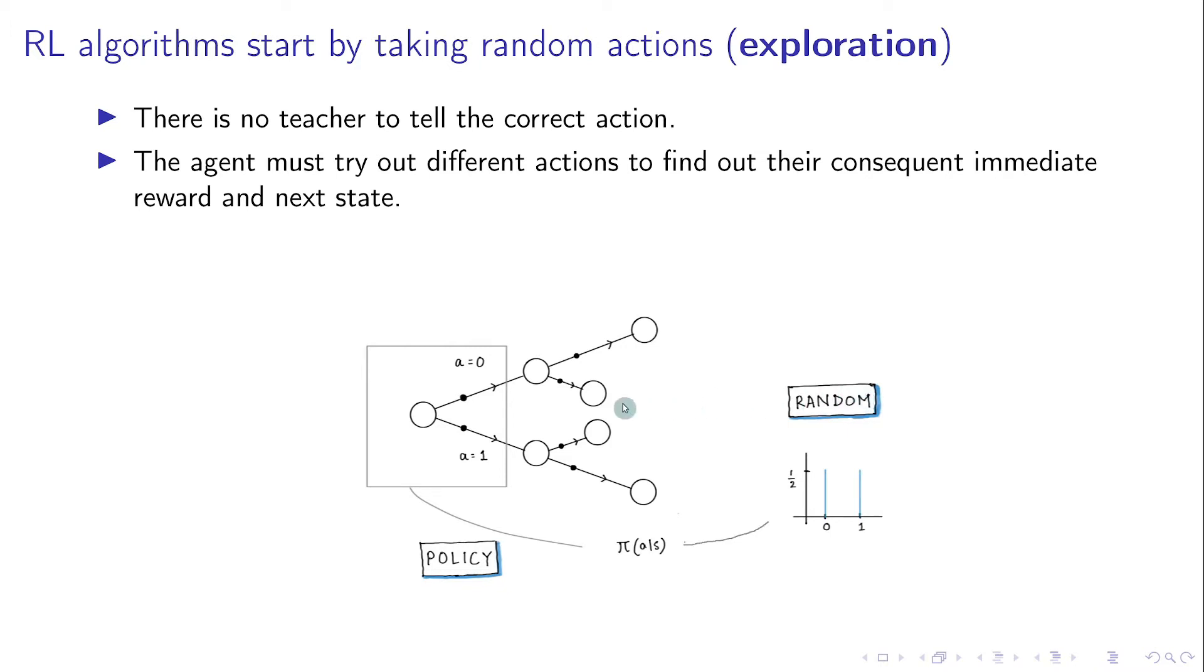A simple way to try out different actions would be to take random actions, meaning that no matter which state the agent is in, it has equal probability of taking each allowed action, and the probability is half in this case.